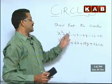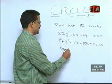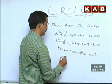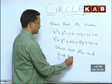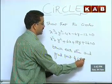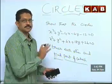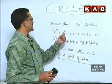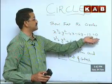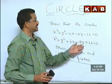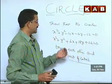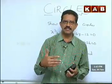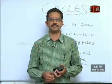The question asks: show that the circles touch each other and find the point of contact. Touch each other means we don't know whether they are touching internally or externally — we have to find it. So let us do it and find the point of contact.